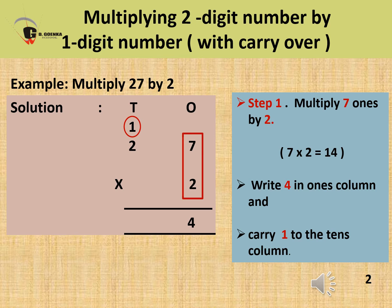Let us understand this concept with the help of an example. We will multiply 27 by 2. So 27 is our multiplicand and 2 is our multiplier. Let us align our sum first. In step 1, multiply 7 ones by 2. When we multiply 7 ones by 2, we get 14. Now write 4 in the ones column and carry 1 to the tens column.